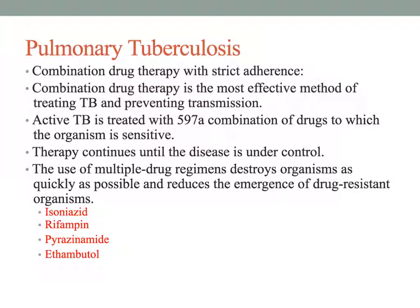Patient education about these medications is very essential. First-line treatment for tuberculosis includes isoniazid, also known as INH, one of the most common medications. An important teaching point is that patients on isoniazid need to take a supplemental B-complex vitamin with this medication.